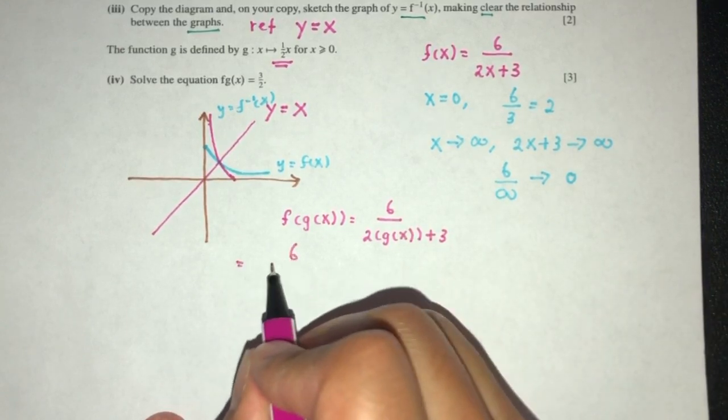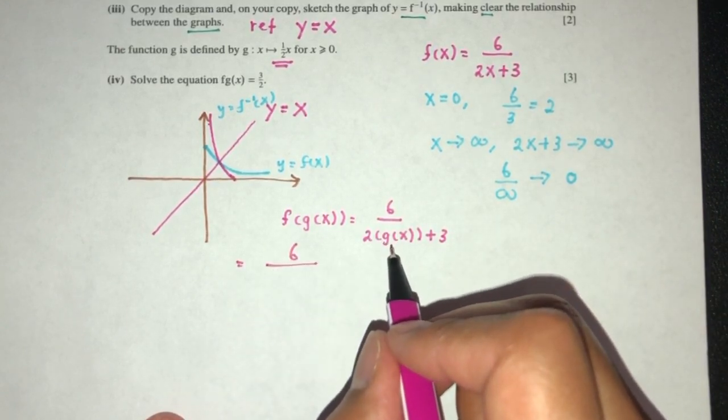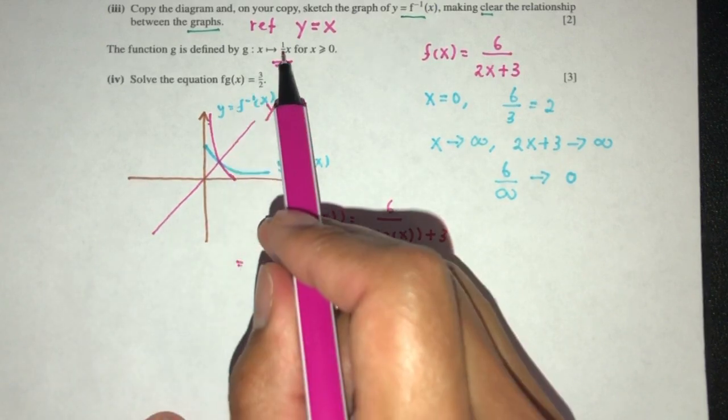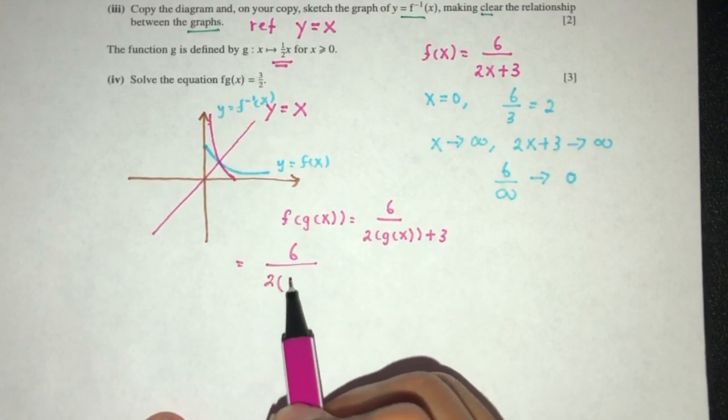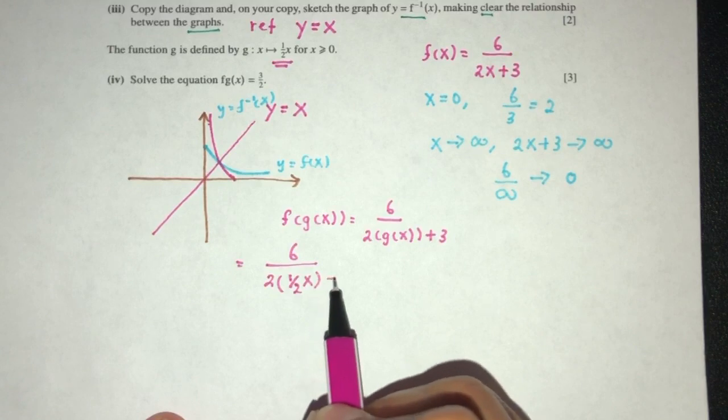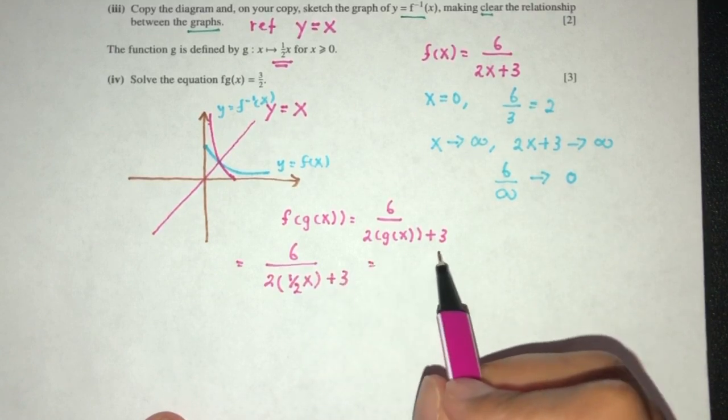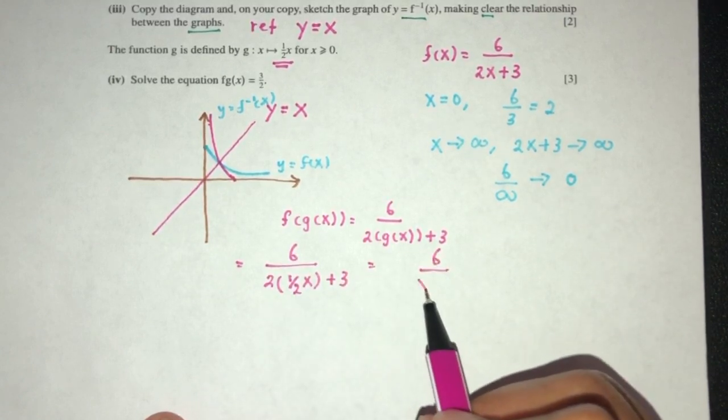Now simplify: 6 over... g of x is x/2, so that should be 2 times (x/2) plus 3, which equals 6 over (x plus 3).